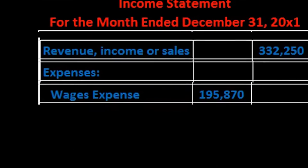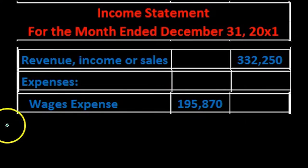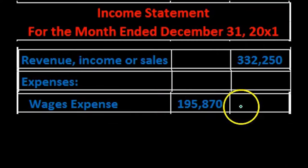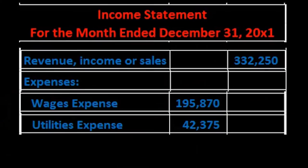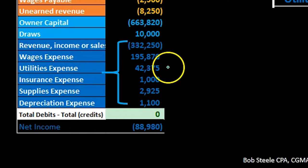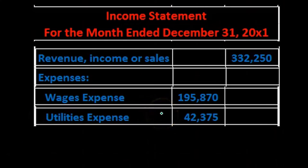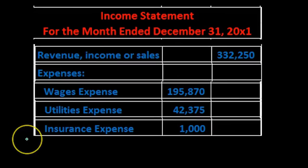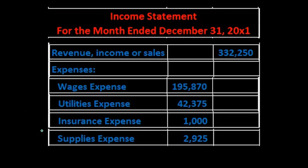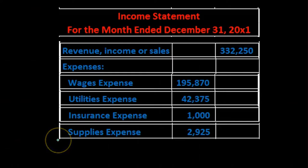We pull over the expenses starting with wages expense, indenting it and placing it in the inner column to show it will be grouped and summed into the outer column. The inner column does not mean debit or credit — it means subcategory. We do the same for utilities expense, insurance expense, and supplies expense, each placed in the inner column as part of the expenses subcategory.